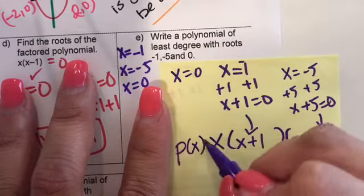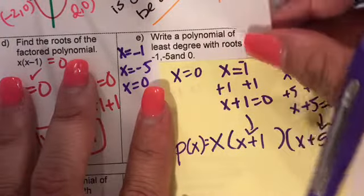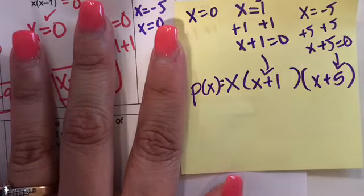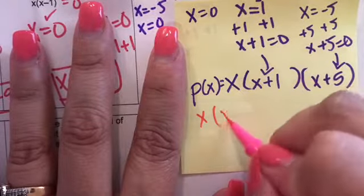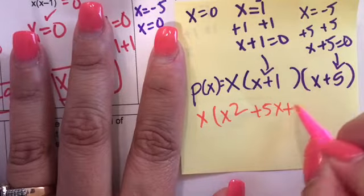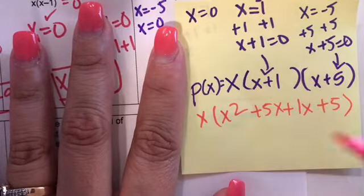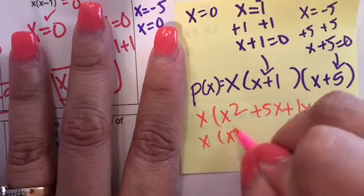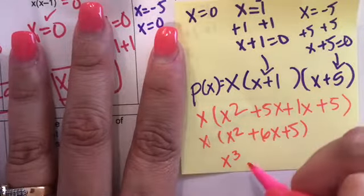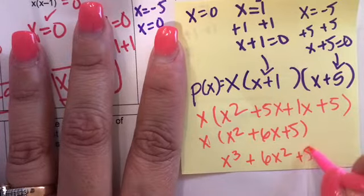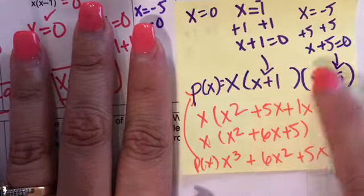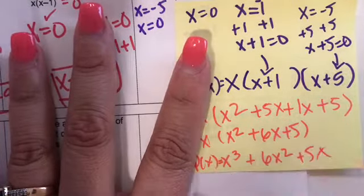Some questions will ask you to multiply it out. Distributing: X times X plus five gives X squared plus five X. Then simplify the inside and multiply out the remaining X factor. You get X cubed plus six X squared plus five X. That is the same polynomial — this version is factored and this version is distributed.